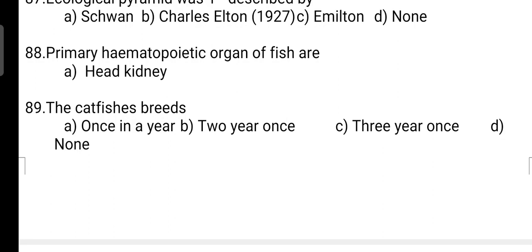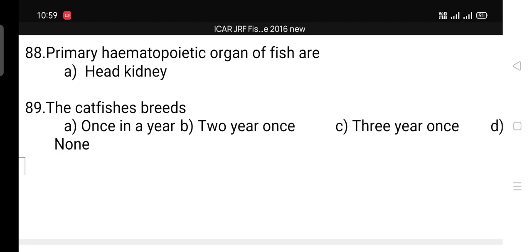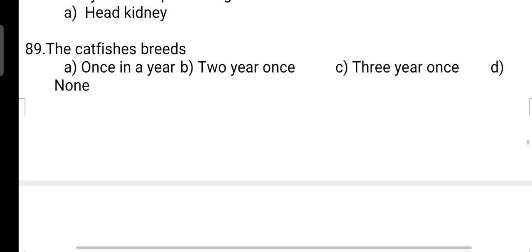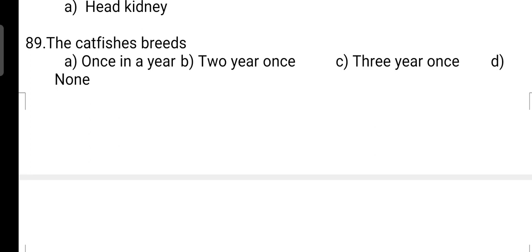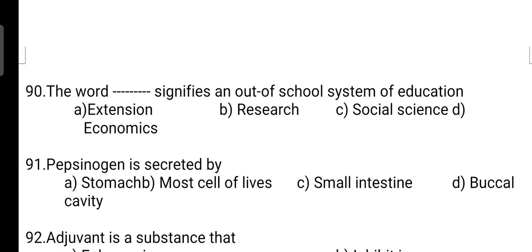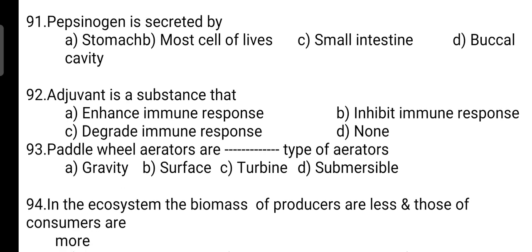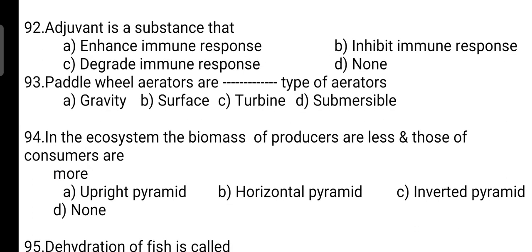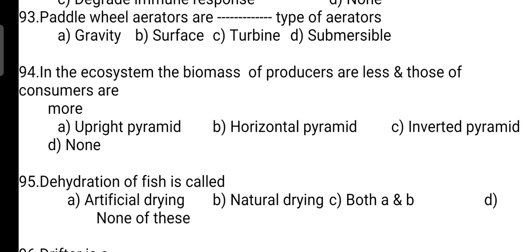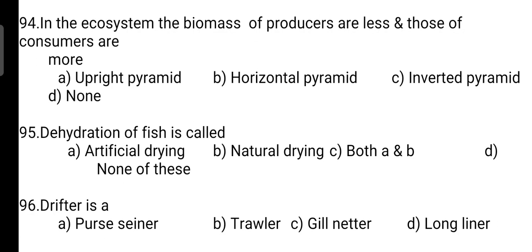Primary hematopoietic organ of fish: the correct answer — the head kidney. Catfishes breed: correct answer is Option A — once in a year. The word 'extension' signifies an out-of-school system of education — correct answer is Option A. Pepsinogen is secreted by: correct answer is Option A — it is secreted by the stomach. Adjuvant is a substance that: correct answer is Option A — it enhances immune response. Paddle wheel aerators are surface type of aerators — correct answer is Option B.